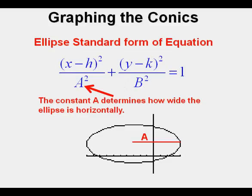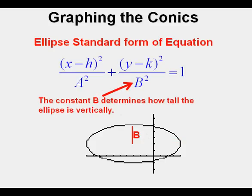The constant a determines how wide the ellipse is horizontally. a is the distance from the center of the ellipse to the edge of the ellipse. For this ellipse, the value of a is 7, since the center is at x equals negative 3 and goes out to the edge at x equals positive 4. The longest measure of an ellipse is called the major axis. The value of a is half of the major axis, so in this case the major axis is 7 times 2, or 14. The constant b determines how tall the ellipse is vertically; b is the distance from the center of the ellipse to the top or bottom. For this ellipse, b is 3 since the center is at y equals 2 and it goes up to y equals 5 at the upper edge. The value of b is half of the smallest, or minor, axis of an ellipse, so in this case the length of the minor axis is 3 times 2, or 6.